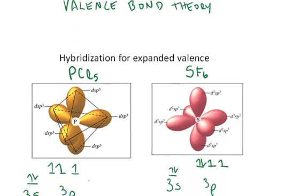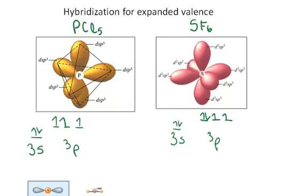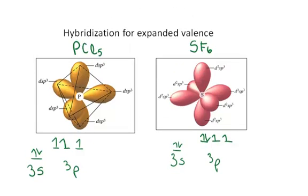First, let's look at the phosphorus. The electron configuration for phosphorus in its ground state is 3s² 3p³ because there are five valence electrons.